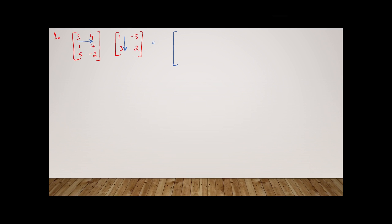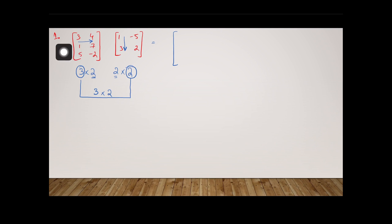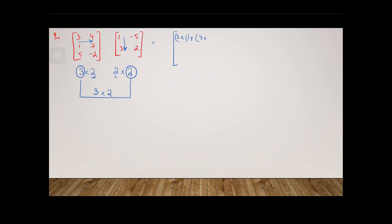The order of the first matrix is three by two, the order of the second matrix is two by two. Since the number of columns of the first equals the number of rows of the second, the resulting matrix will have order three by two. I take the first element of row one and multiply it with the first element of column one: three times one, plus four times three.